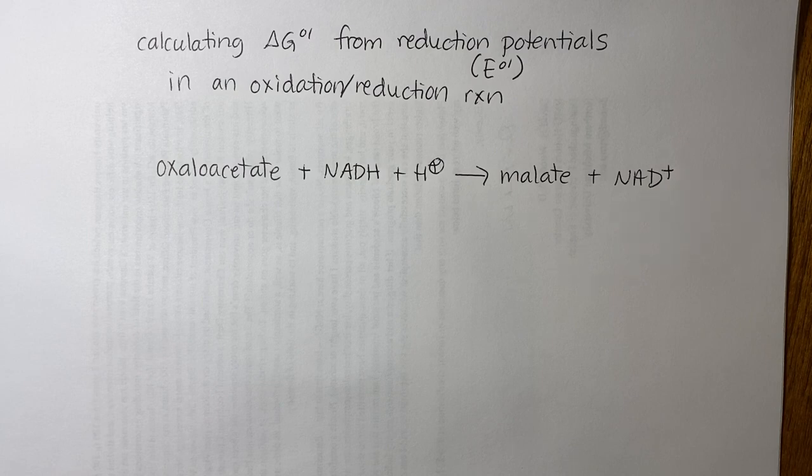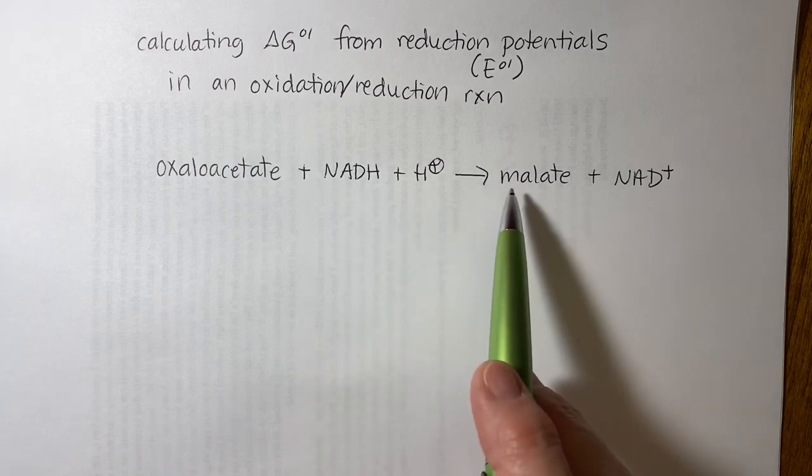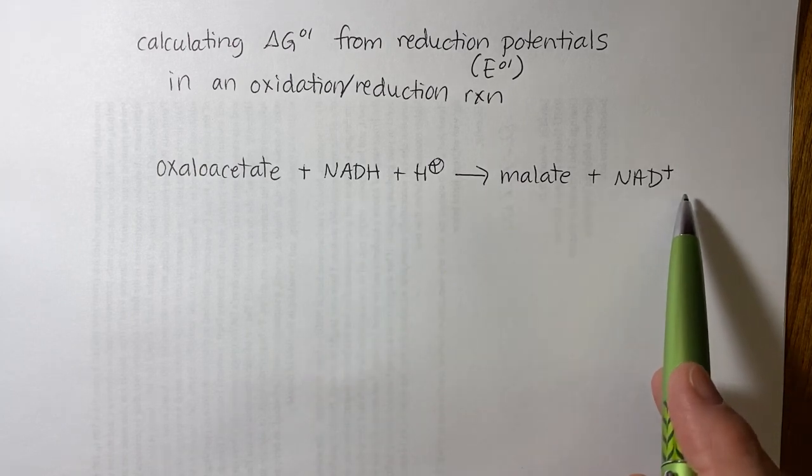So for our example, we have the reaction of oxaloacetate plus NADH going to malate to NAD+.